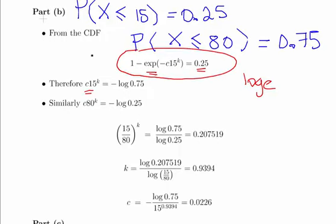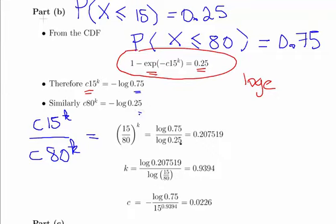So what we have here is two expressions with two unknowns. The simplest way to get started is to see if we can divide out C by looking at the ratio of the two expressions. We have C times 15 to the power of K divided by C times 80 to the power of K, which we can re-express as 15 over 80 to the power of K. And that is the ratio of the terms on the other side of the equation.